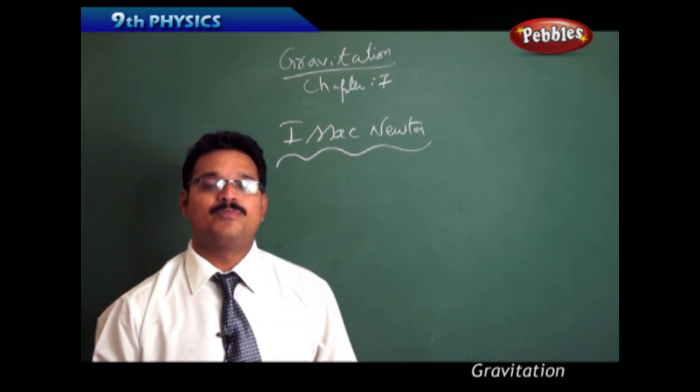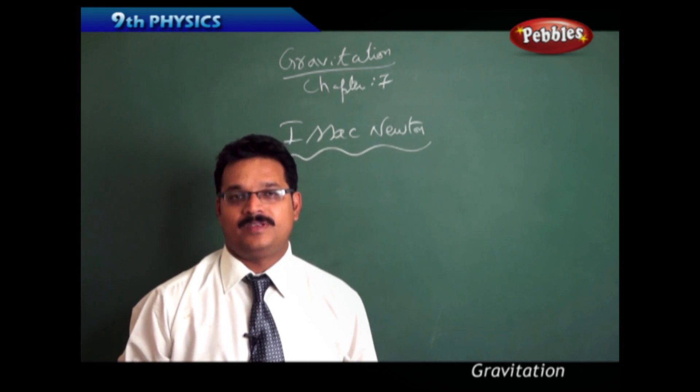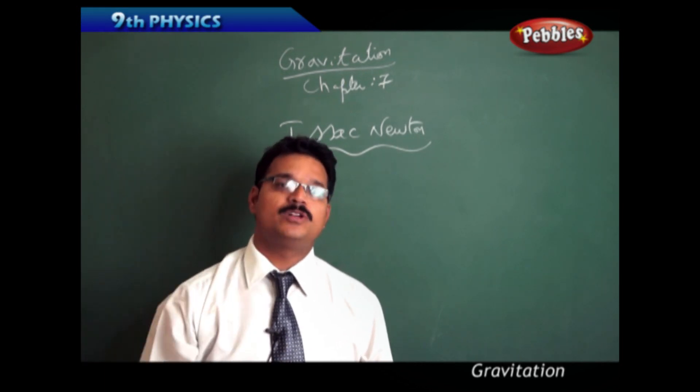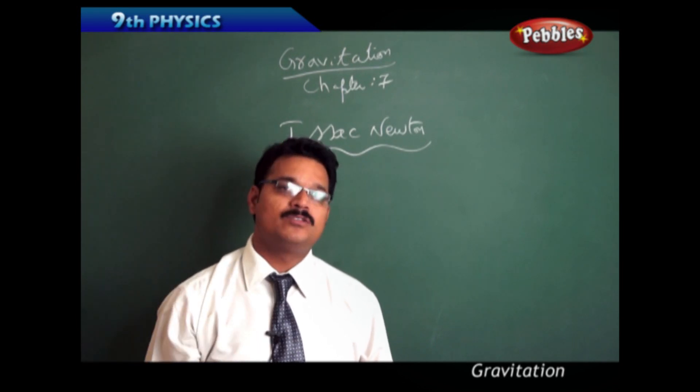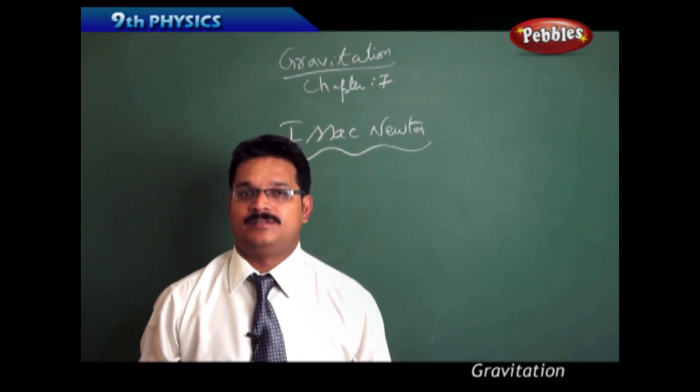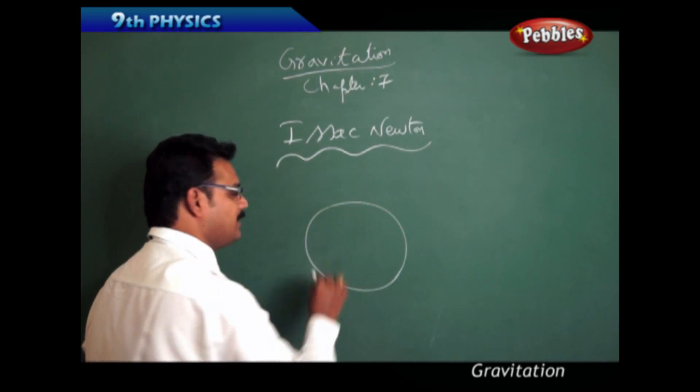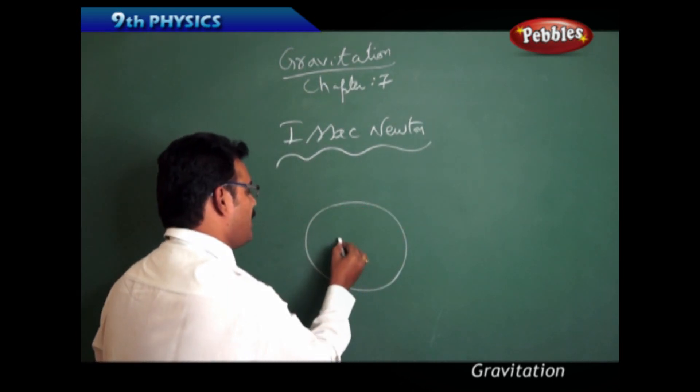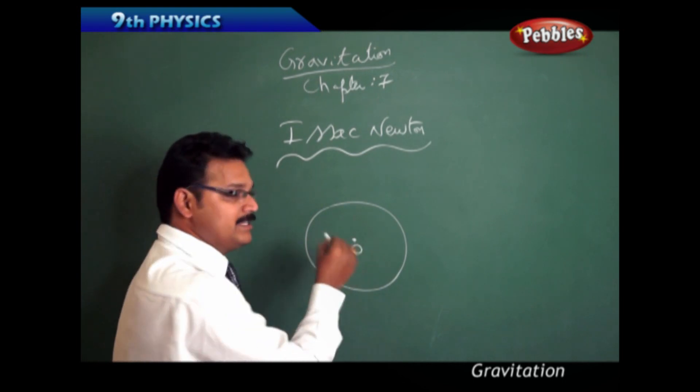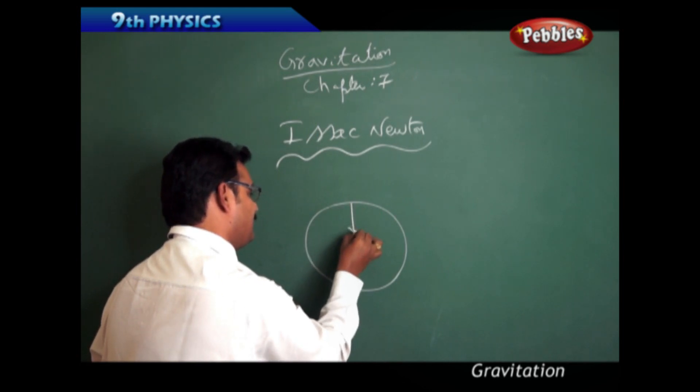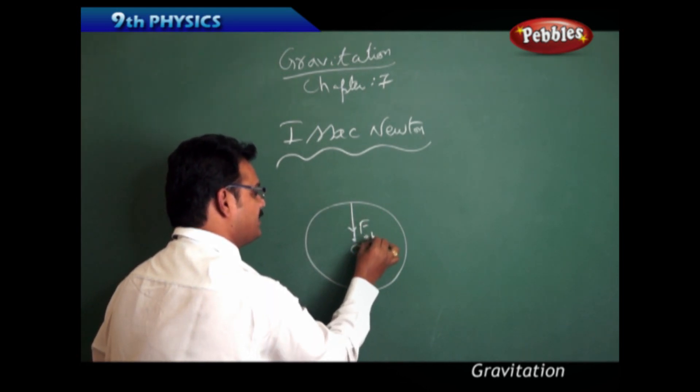Gravitation is a very important aspect in our life. Any body which is thrown upwards has to come to the ground, fall onto the surface of the earth. Why? Because earth is a massive body and has attraction force towards its center.